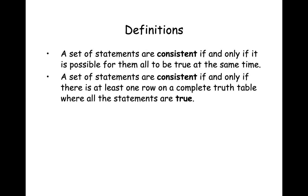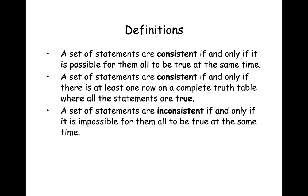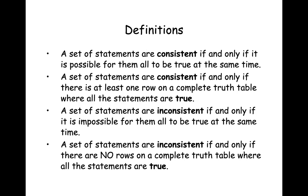A set of statements is consistent if it's possible for them all to be true at the same time, and that row in the truth table shows that possibility. A set of statements is inconsistent if and only if it is impossible for them all to be true at the same time. We show this by constructing a complete truth table where there are no rows where all the statements are true at the same time.